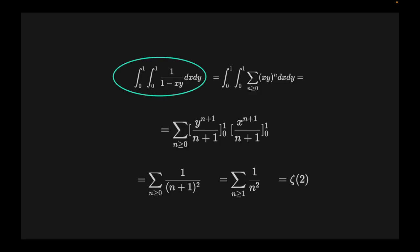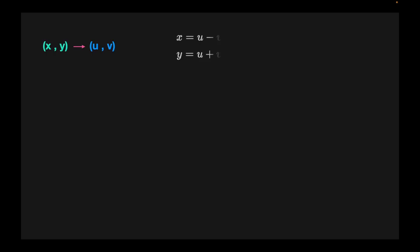To actually calculate this integral and prove it equals pi squared over 6, we need to perform a change of coordinates — from x,y coordinates to u,v coordinates. The transformation equations are: x equals u minus v, and y equals u plus v. Adding and rearranging gives us u equal to (x+y)/2 and v equal to (y−x)/2.